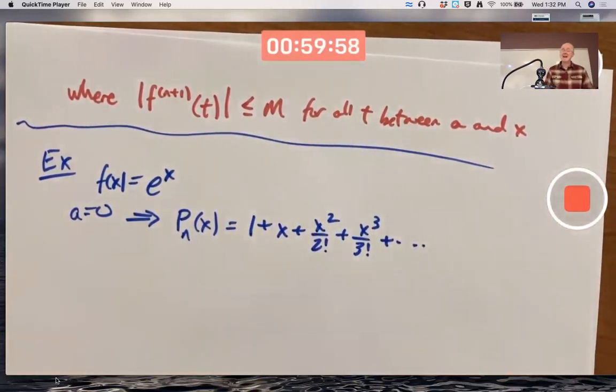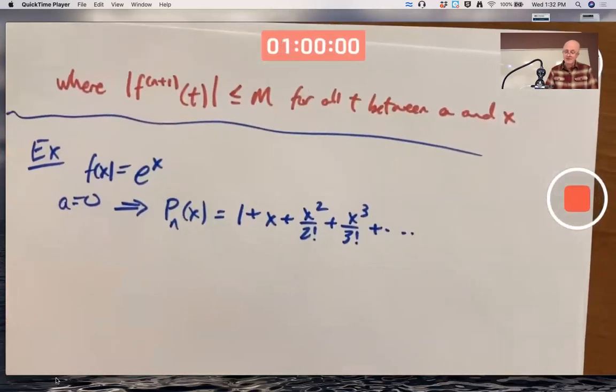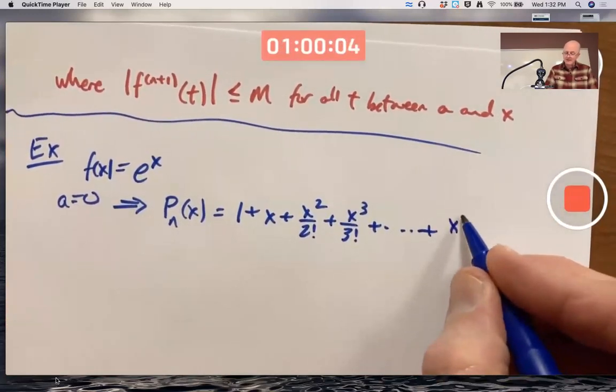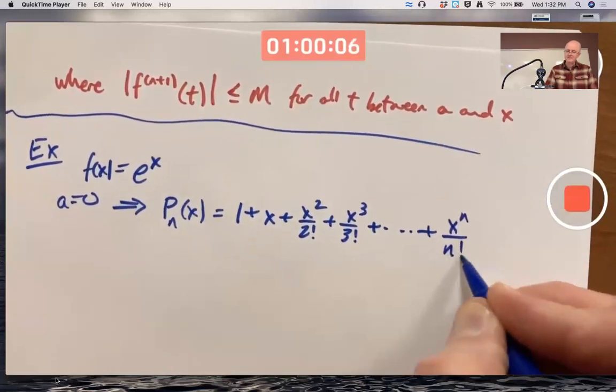So when I put plus dot dot dot, I don't want to stop. I want a last term. That last term would be nth degree, x to the n divided by n factorial. That's the nth degree Taylor polynomial for e to the x centered at a equals 0. You know this already.